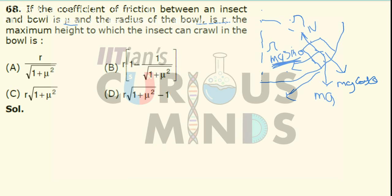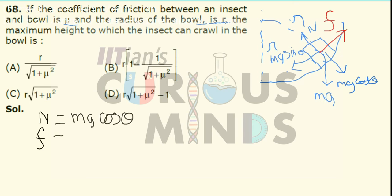Due to the gravitational force, the insect will start slipping down. Once it starts slipping down, there will be a friction force acting in the opposite direction. So for the maximum height, the normal force will be equal to Mg cosθ and the frictional force will be equal to Mg sinθ.